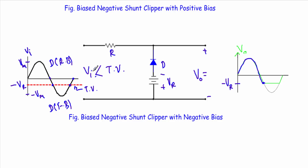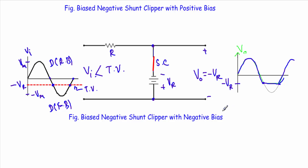Now consider the input voltage from this point to this point, where the input voltage is less than the transition voltage. When the input voltage is less than the transition voltage, the diode will be in forward bias, so I can replace it with a short circuit. With the diode shorted, we are taking the output across these two terminals. The output voltage will be equal to minus Vr — from this point to this point our output voltage will be equal to minus Vr, taking a shape like this. After that our output will follow the input. This ends the lecture on negative shunt clipper with biased voltage.